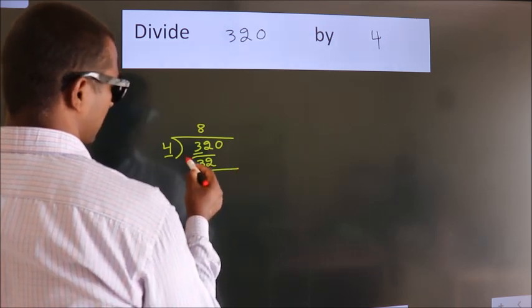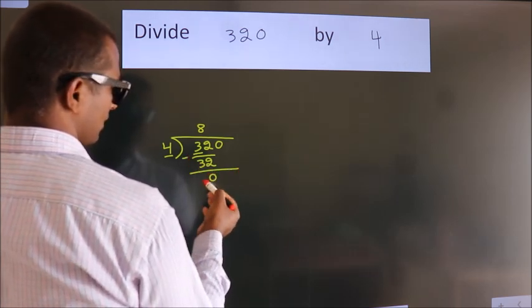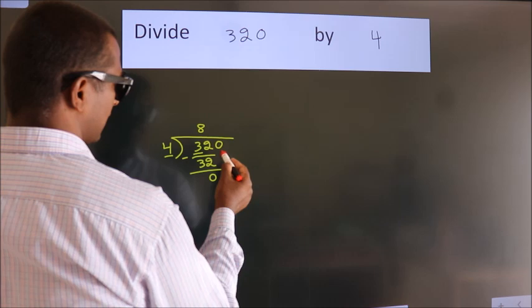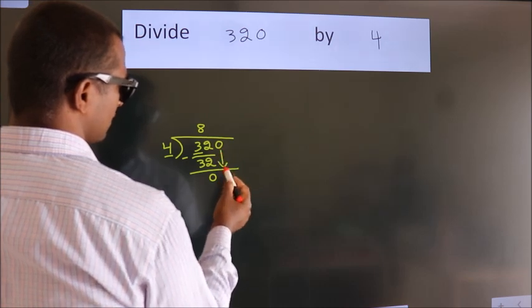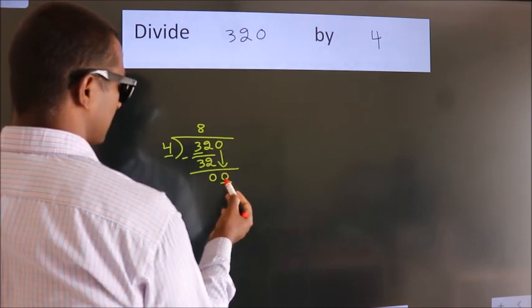Now we should subtract. We get 0. After this, bring down the beside number. So 0 down.